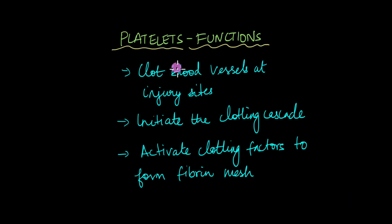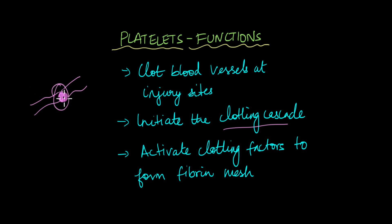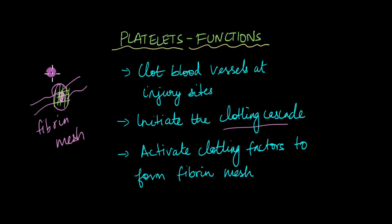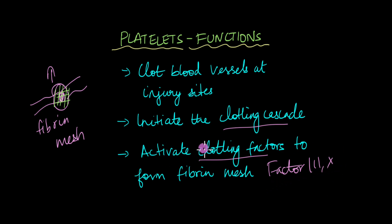The function of platelets is to clot the blood vessels at injury sites. Once the platelet plug is formed at the site of injury, the clotting cascade is initiated. Just this platelet plug alone is not enough to properly stop the blood — you also need a mesh-like fiber on top of the platelet plug known as the fibrin mesh. Fibrin mesh production can only be initiated once the platelet plug is formed. Platelets activate the different clotting factors — such as Factor 3 and Factor X — which initiates the coagulation cascade. Eventually the fibrin mesh forms surrounding the platelets, ensuring blood does not escape.